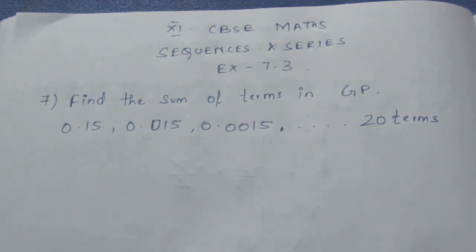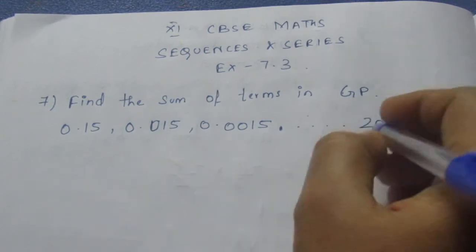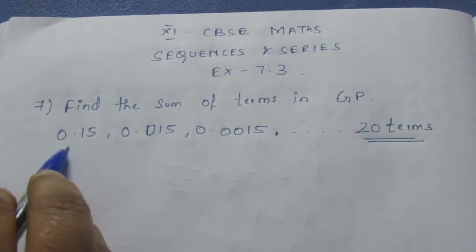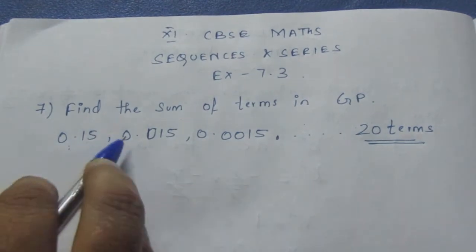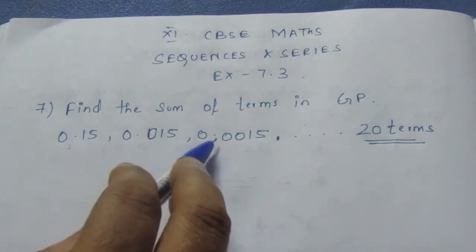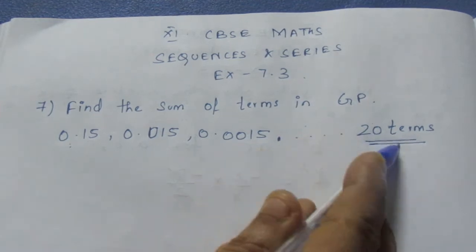Find the sum of terms in GP. They have asked to find the sum of terms in GP. Here the given question is 0.15, 0.015, 0.0015, up to 20 terms.